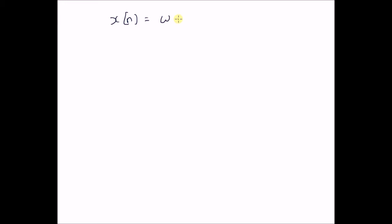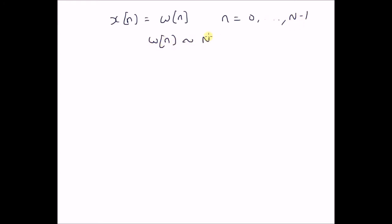So, given the model x(n) = w(n), where w(n) for n = 0 to N−1 follows a Gaussian distribution with mean 0 and variance σ². Here, σ² is unknown.